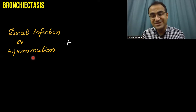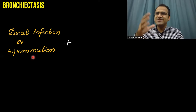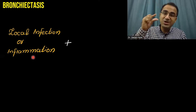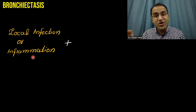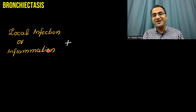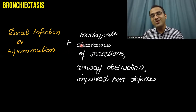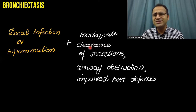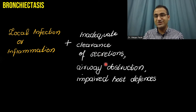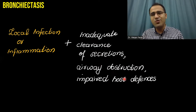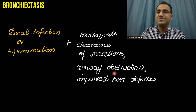There is also inflammation as occurs in cystic fibrosis and Kartagener's syndrome. The mucus secretions are thick and block the bronchi, causing infection behind it and destruction of bronchi and bronchioles. This destruction leads to inadequate clearance of secretions, which further leads to infections — a vicious cycle begins — causing airway obstruction and impaired host defenses.